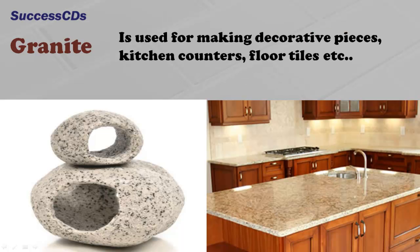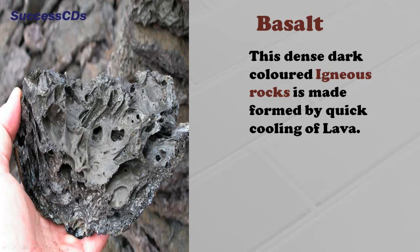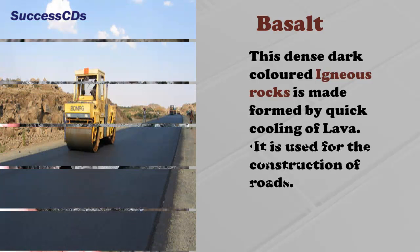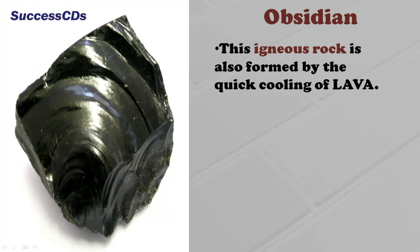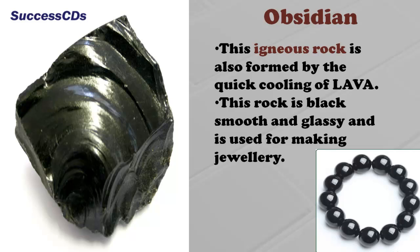Granite is used for making decorative pieces, kitchen countertops, flooring tiles, etc. Basalt, a dense dark-colored igneous rock, is formed by the quick cooling of lava and is used for the construction of roads. Obsidian is also formed by the quick cooling of lava. This rock is black, smooth, and glassy, and is used for making jewelry.